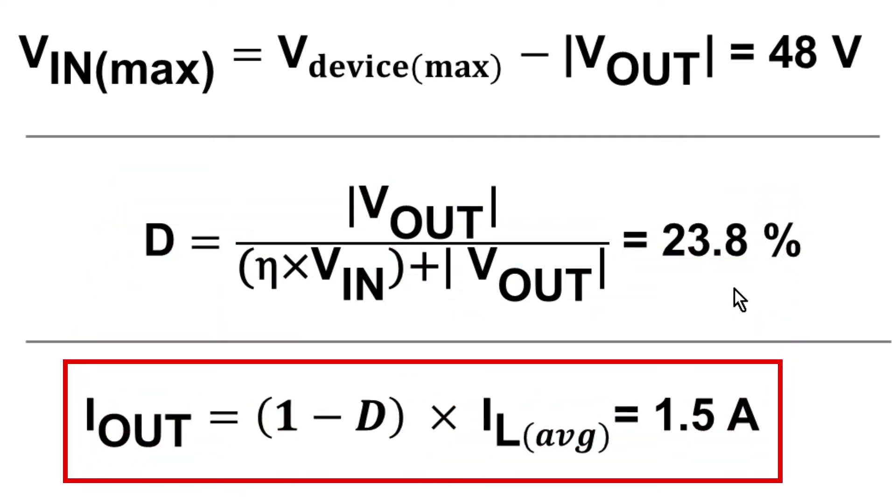Finally, the maximum operating current that this part can supply is dictated by this equation, which is the average inductor current multiplied by 1 minus the duty cycle. That comes out to be 1.5 amps.